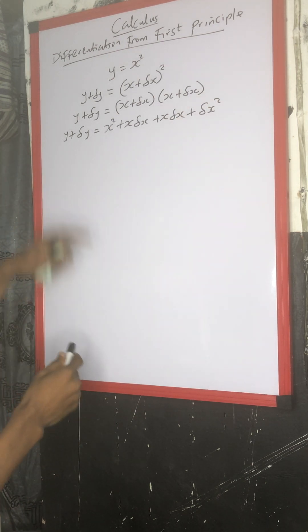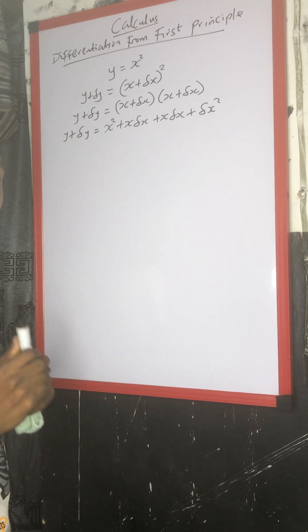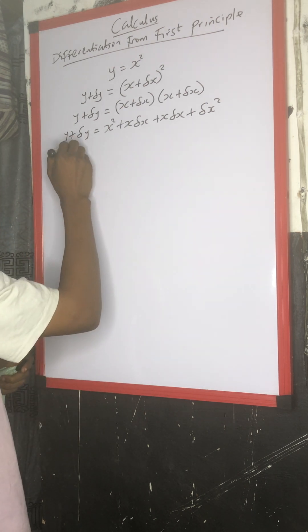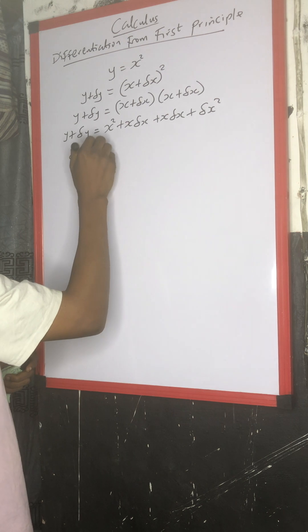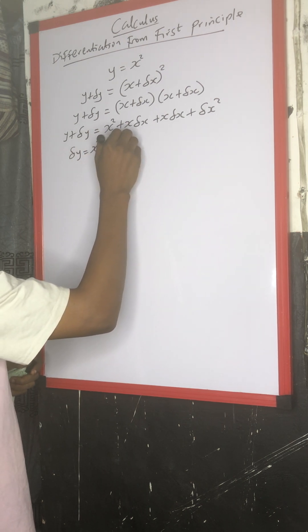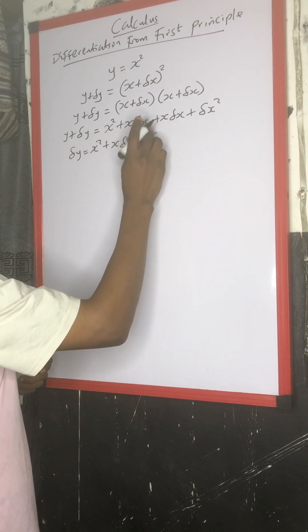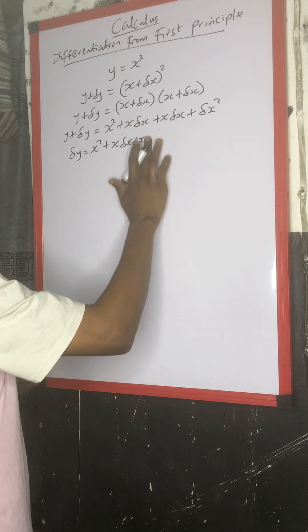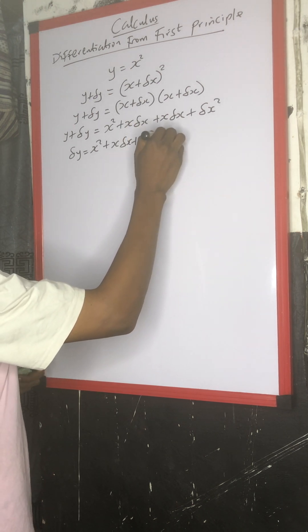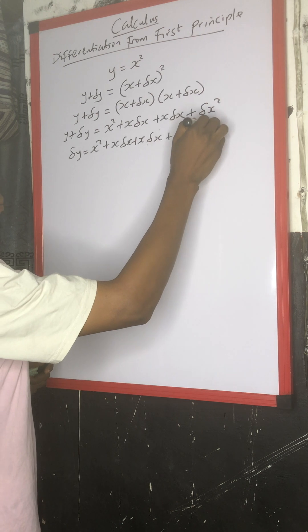I said the next step you take is to make change in y the subject of the formula. Then we have change in y equals to s squared plus s change in x plus s change in x, then plus change in x squared minus y.